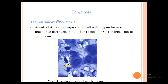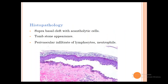Diagnosis: Tzanck smear — denude the bulla with a blade, scrape the base with the blunt end, put on a slide and stain with Giemsa. You will see acantholytic (Tzanck) cells: large, modified rounded keratinocytes with a big hypochromatic nucleus, basophilic cytoplasm, and a perinuclear halo due to peripheral condensation of cytoplasm. Histopathology shows suprabasal split — also known as tombstone appearance. The blister cavity contains neutrophils, lymphocytes, and acantholytic cells.